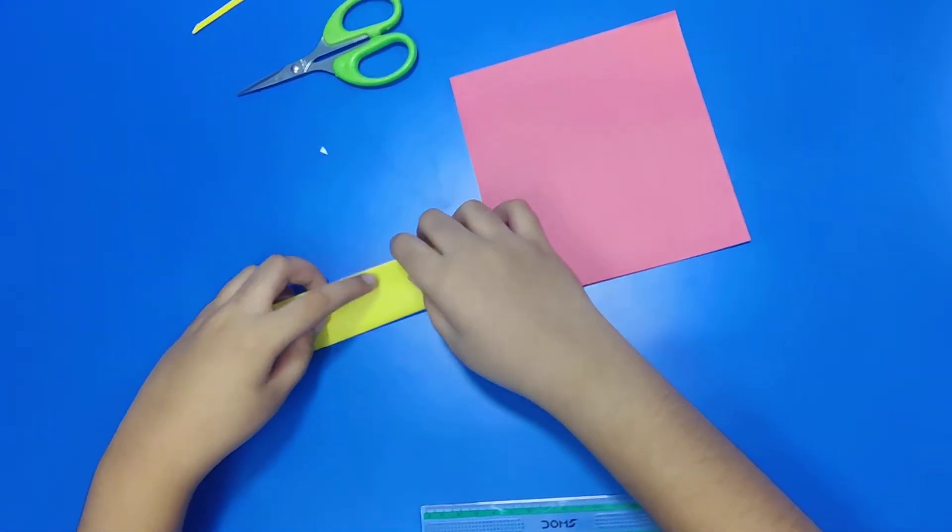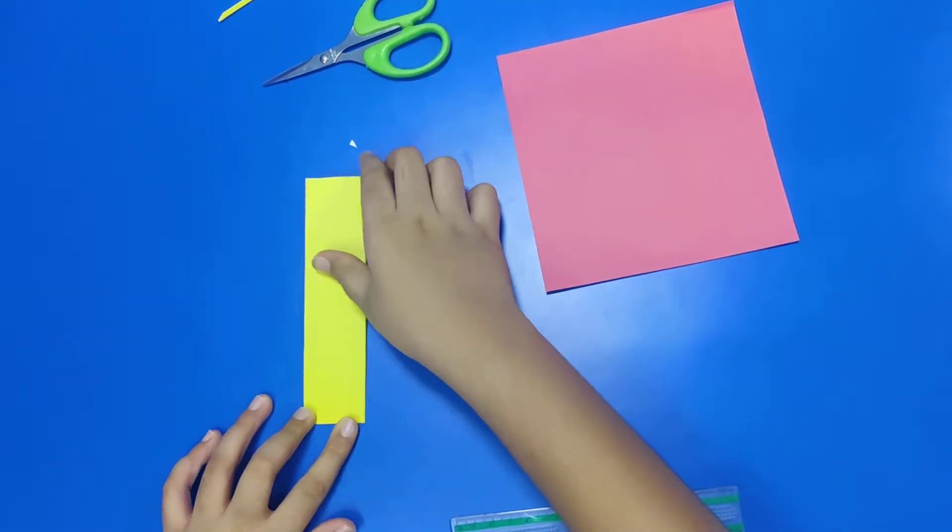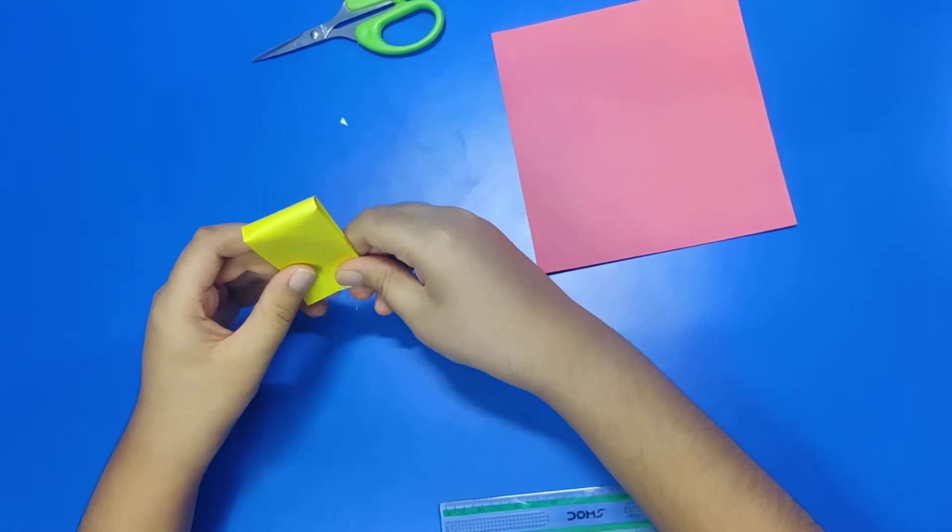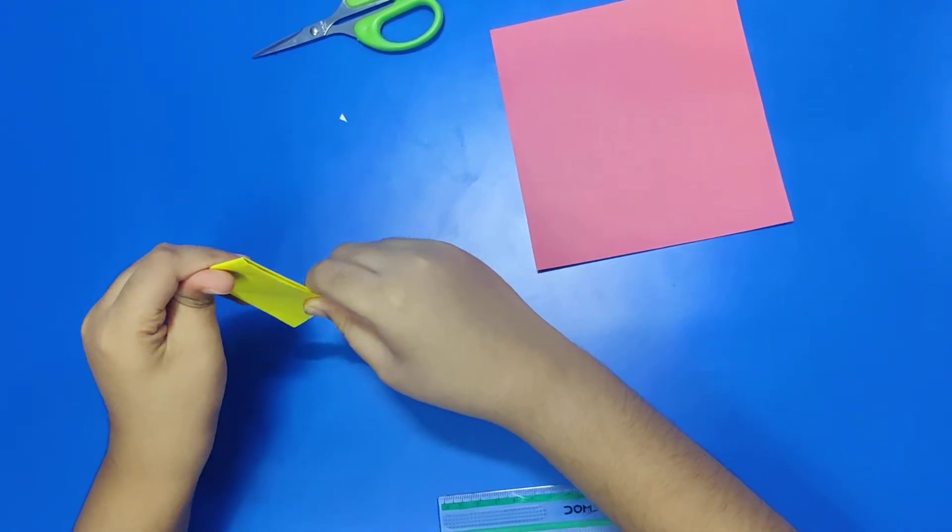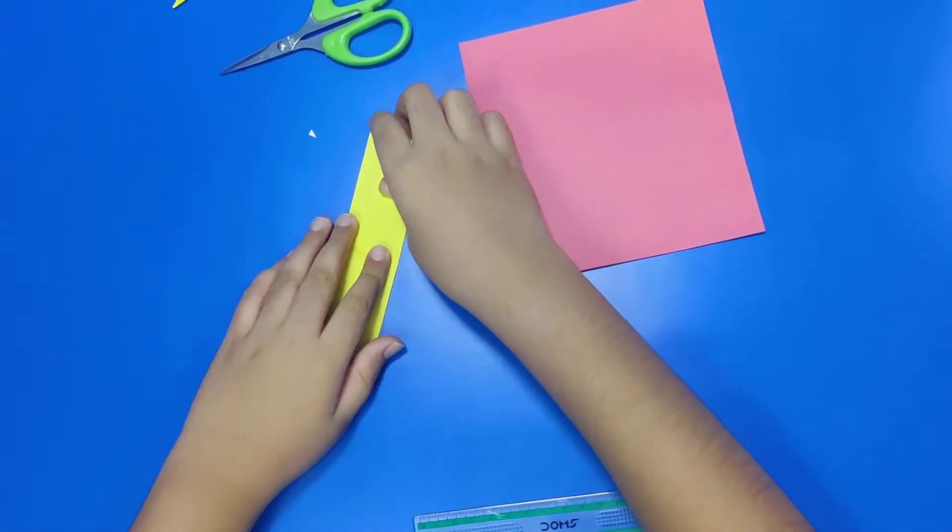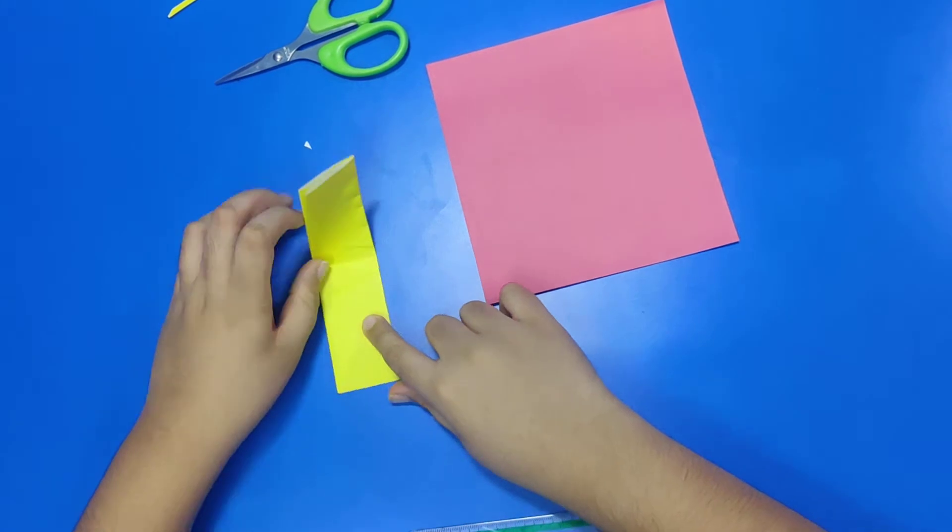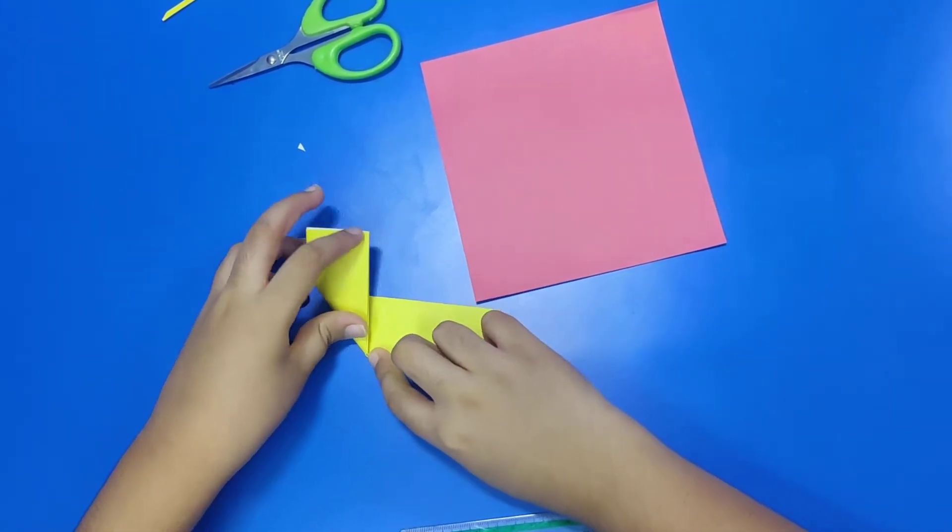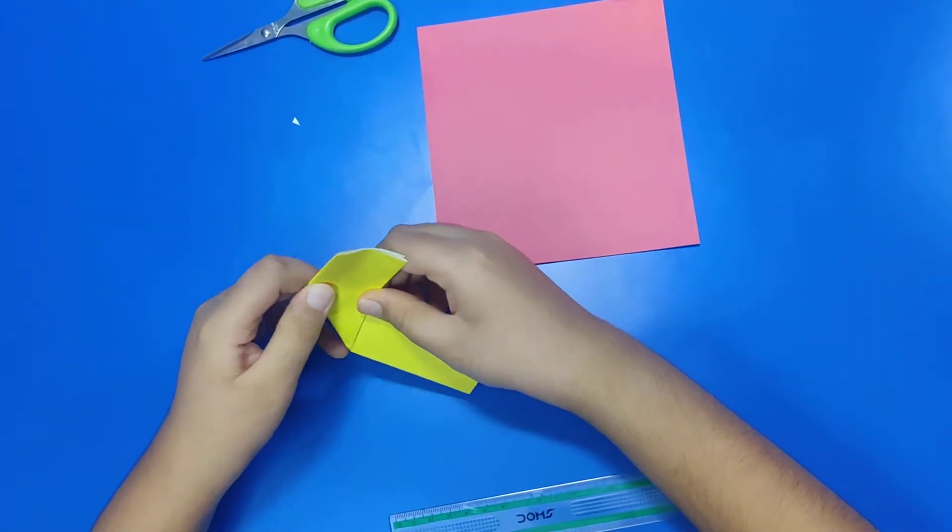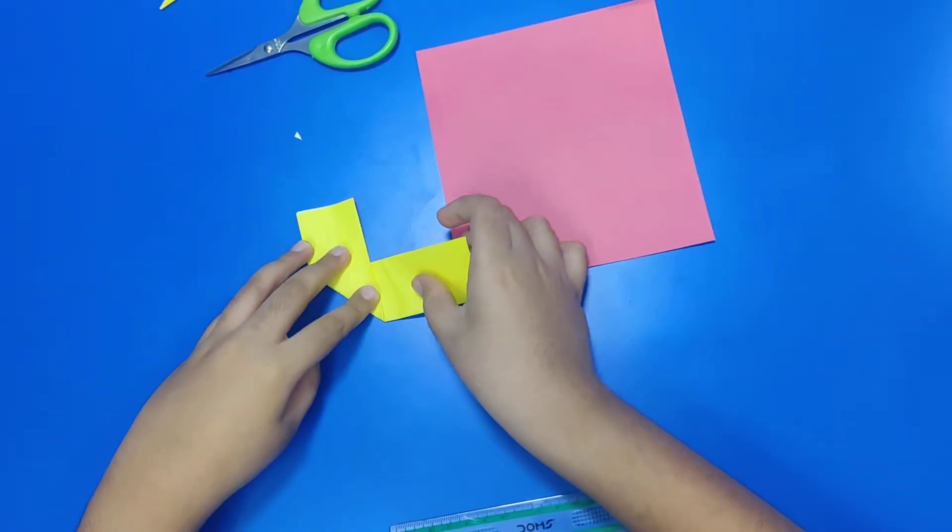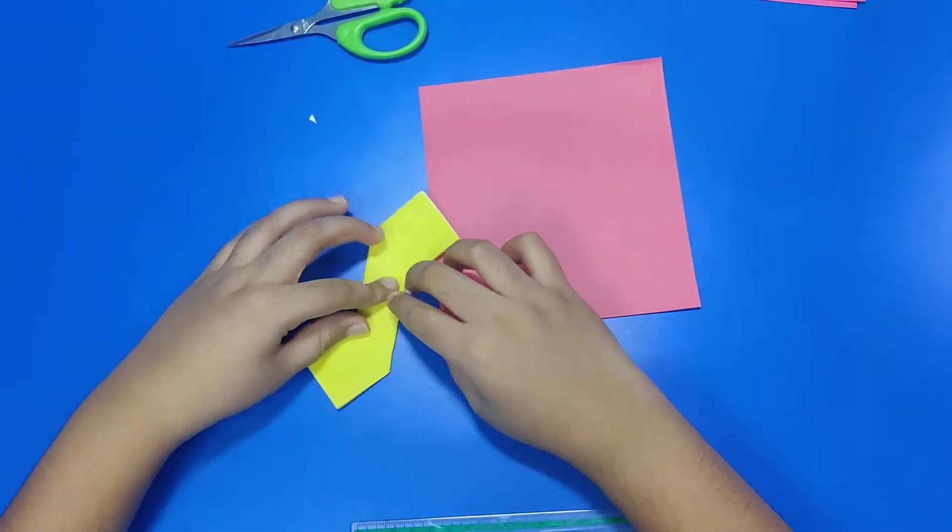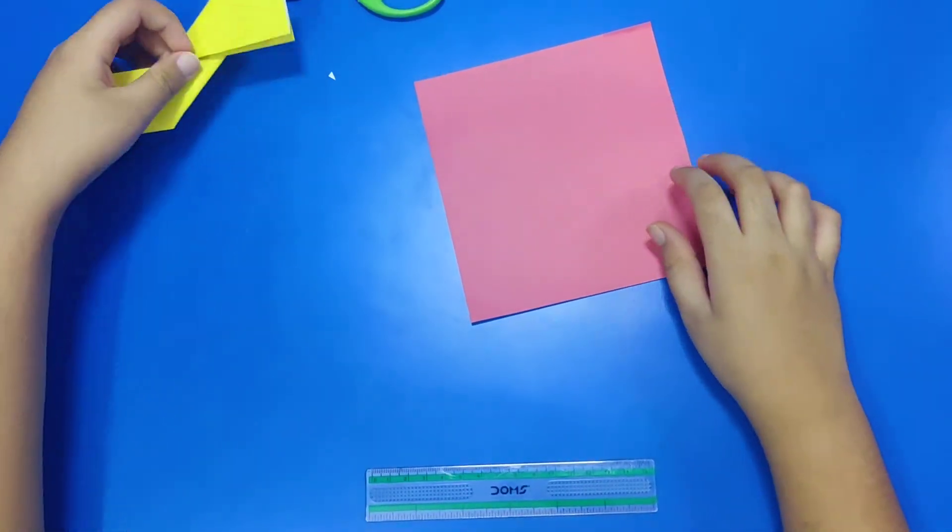And now fold it in half. Again fold it like this. Then unfold it. And then fold it in this side. It should come till here only. Same here. Now keep this aside.